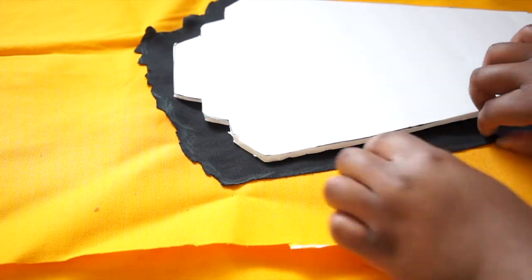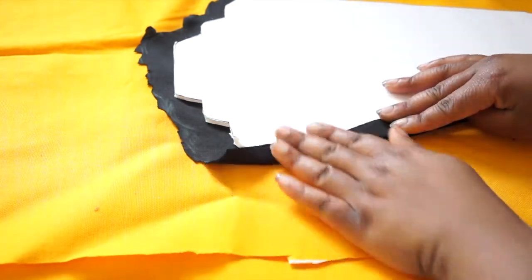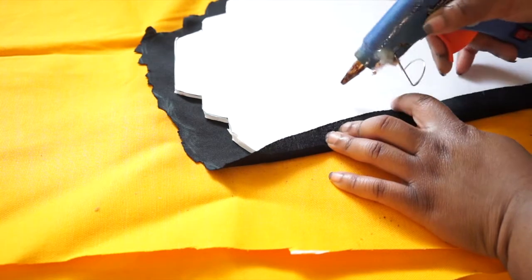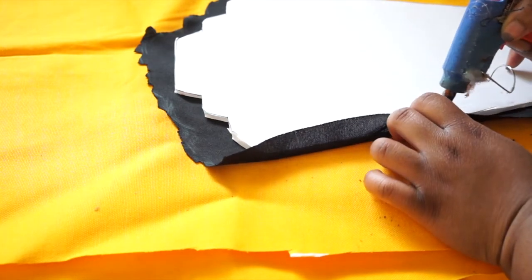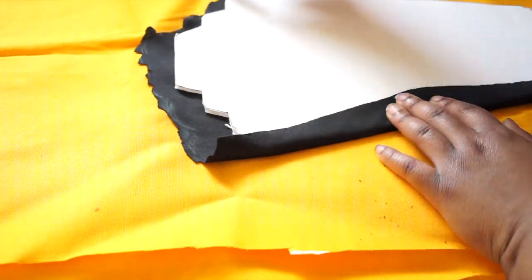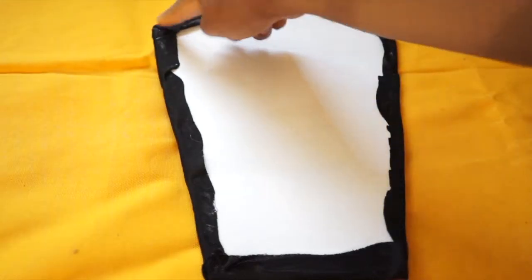Fit your fabric onto your cardboard cutout using your hot glue or E6000. Continue all the way around until complete. It should look like this.